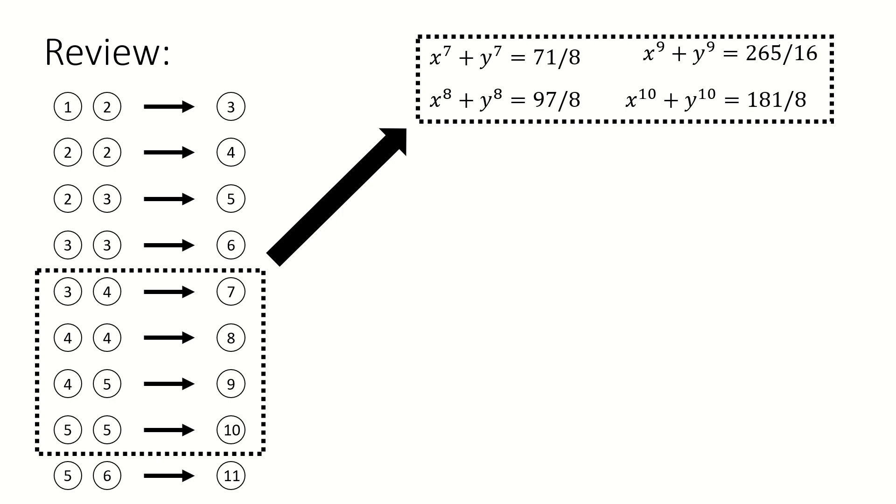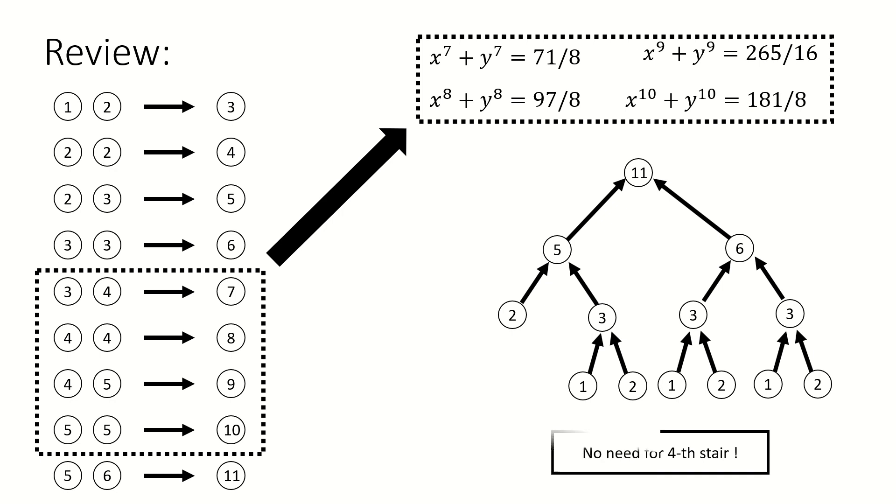By the way, if you still remember, in the previous slides in the comment box, I said to solve stair 11 we don't need stair 4. Here I show you a picture to better understand this reason. The goal is to solve oval 11. To reach oval 11, we need oval 5 and oval 6. To reach oval 5, we need oval 2 and oval 3. To reach oval 6, we need oval 3 only. To reach oval 3, we need oval 1 and oval 2. So from this tree, you can see clearly oval 4 never appears. That's the reason.